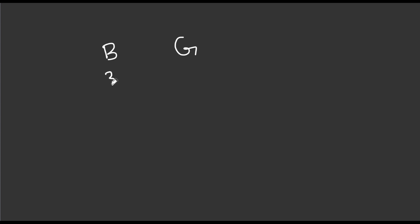Now let's look at some depth in a class example. There are boys and girls in the class. If you look at the boys, there are 30. There are 40 girls. The boys' average marks are 50. The girls' average marks are 60.